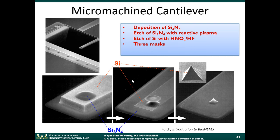The next few slides show examples of process integration — meaning if you combine deposition, patterning, and more deposition and patterning, you can make interesting three-dimensional devices. This is an example of a micromachined cantilever, a device used in atomic force microscopy, or AFM. Have any of you heard of AFM? Yes — it's used for measuring the topography of a sample with very fine resolution, like nanometer resolution.